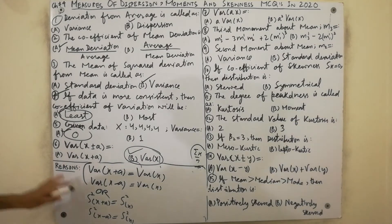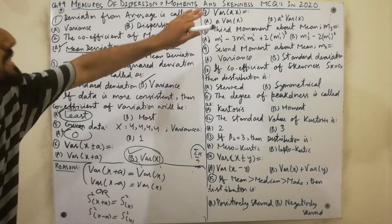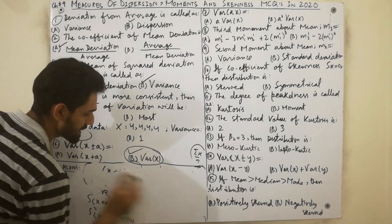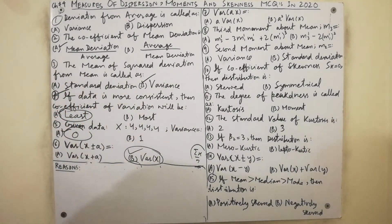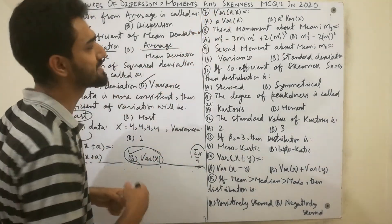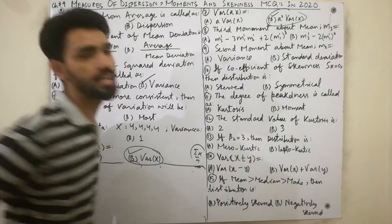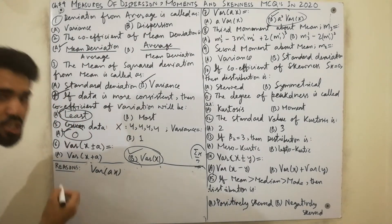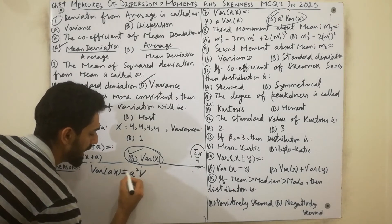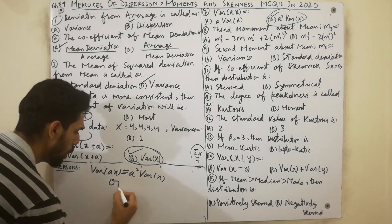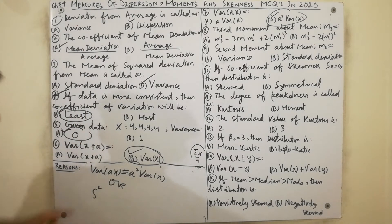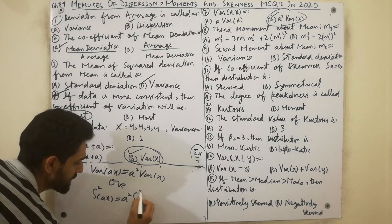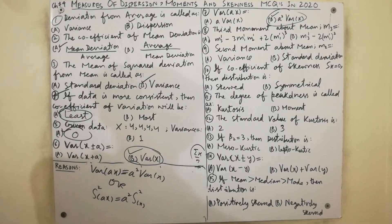MCQ seven, the next property of variance: variance of (ax) is always equal to a-squared times variance of x. We can also write this as s-squared of (ax) equals a-squared times s-squared of x. Must remember this property — it is very important in any calculation.